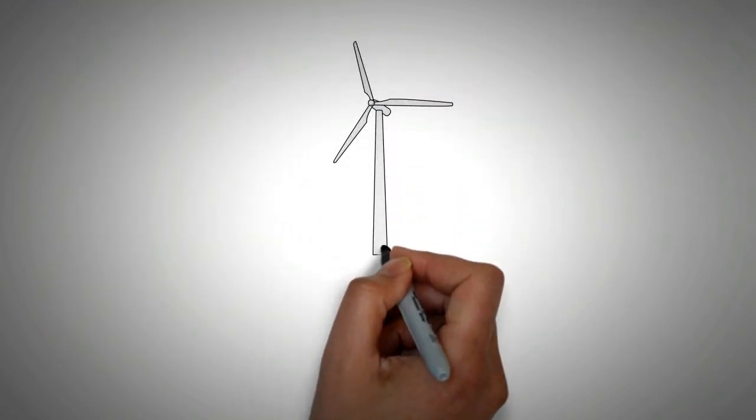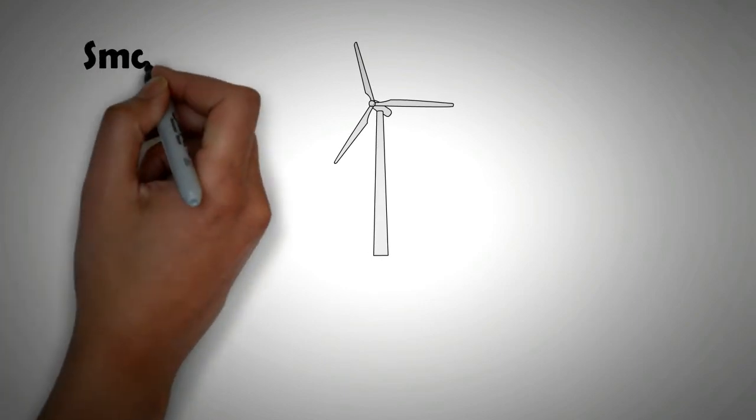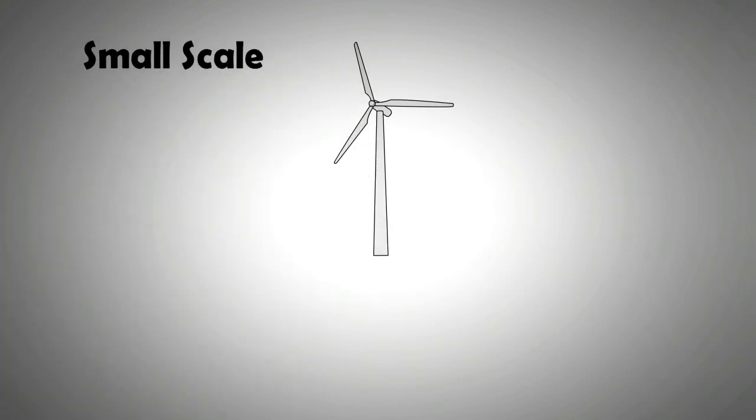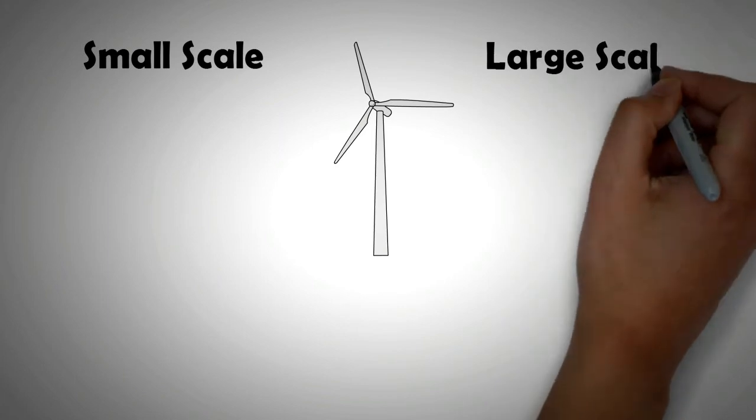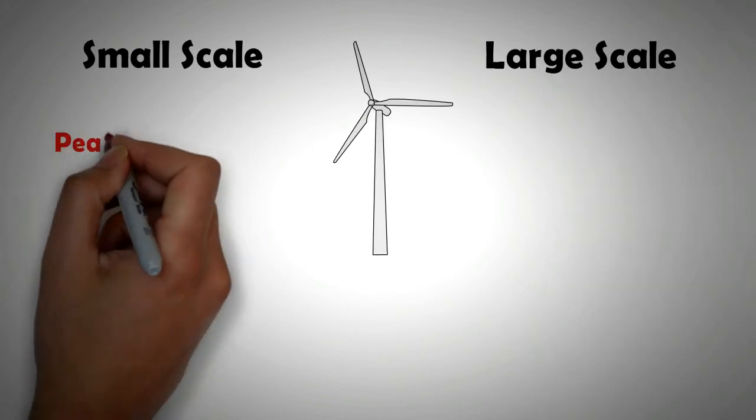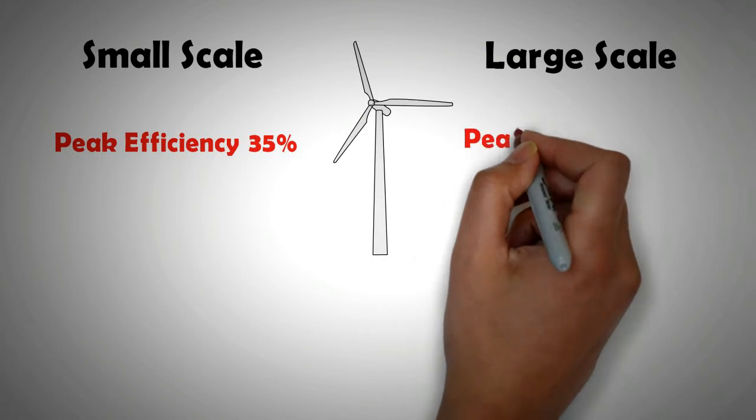The peak efficiency of a very well-designed small-scale turbine can reach 35%, but it rarely does so. Whereas for larger turbines, figures of around 40% are more commonly noted.